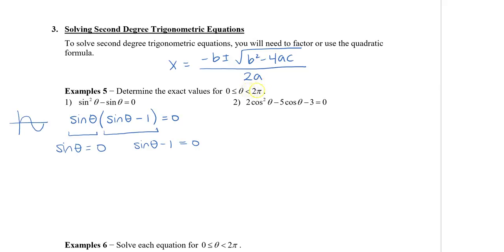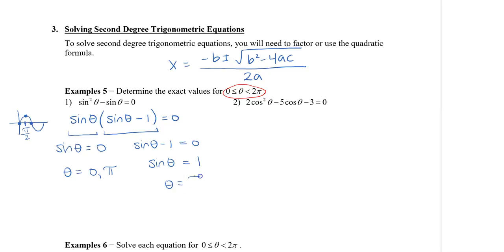We can say sine theta equals 0, or sine theta minus 1 equals 0. I'm going to draw the sine graph because these values are 0 and 1, which are special values. Over the domain 0 to 2π, sine theta equals 0 at 0 and at π. For the second equation, sine theta equals 1, which occurs at π/2. So this equation has three solutions: θ = 0, π/2, and π.